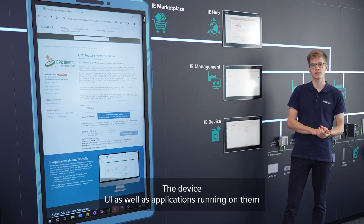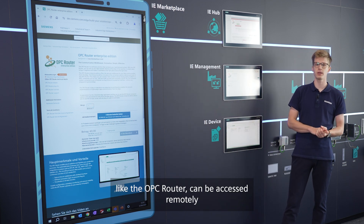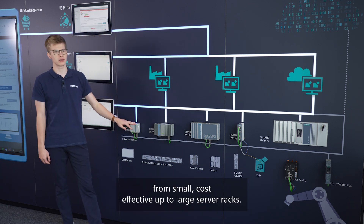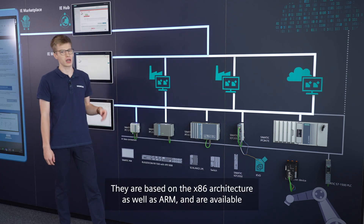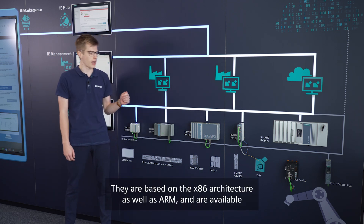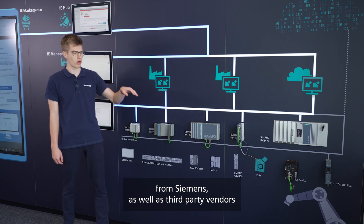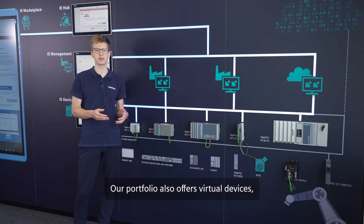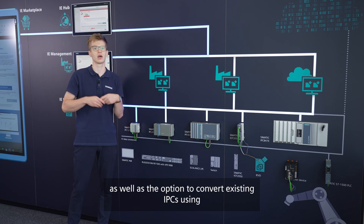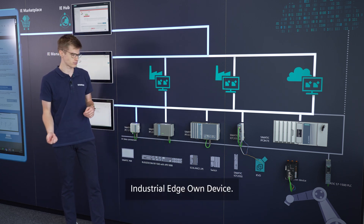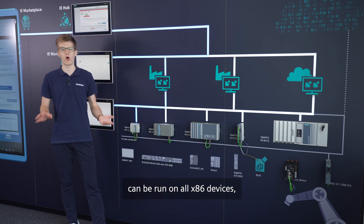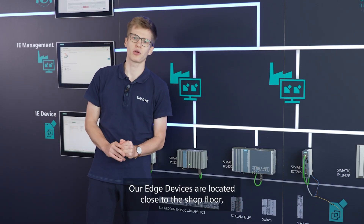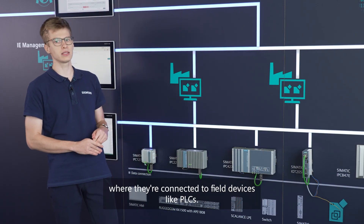The device UI, as well as applications running on them like the OPC Router, can be accessed remotely using the remote access feature. Industrial Edge devices are available from small, cost-effective models up to large server racks. They are based on x86 as well as ARM architecture, and are available from Siemens as well as third-party vendors like Novacon and Weidmüller. Our portfolio also offers virtual devices, as well as the option to convert existing IPCs using Industrial Edge On Device. The OPC Router application can run on all x86 devices starting with the 227E or larger, and edge devices are located close to the shop floor where they connect to field devices like PLCs.